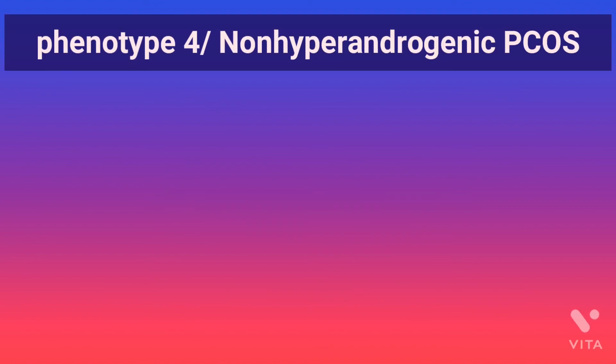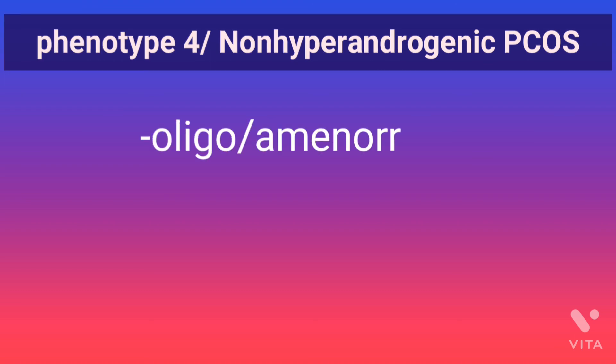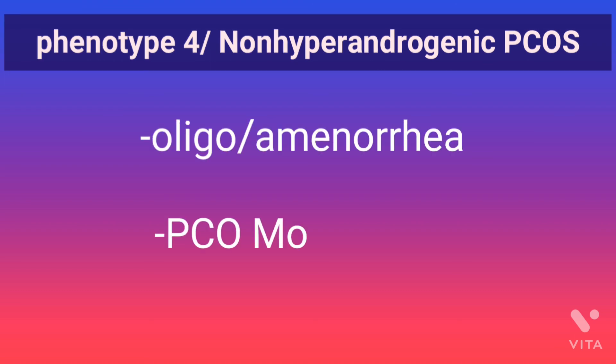Phenotype 4 is the less severe phenotype and is also known as non-hyperandrogenic PCOS. In this type, oligo or amenorrhea is seen and PCO morphology is also seen, but there is no evidence of biochemical or clinical hyperandrogenism or hirsutism.